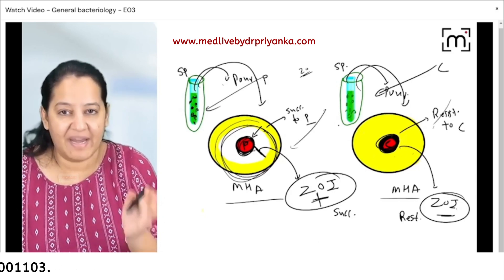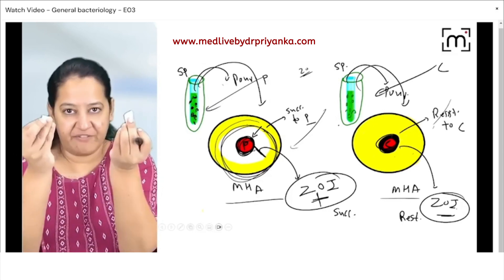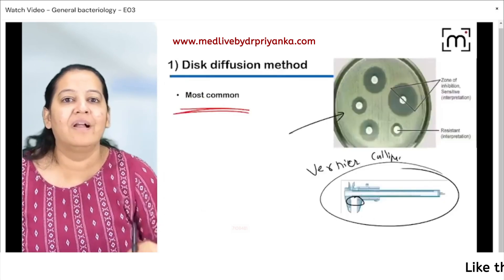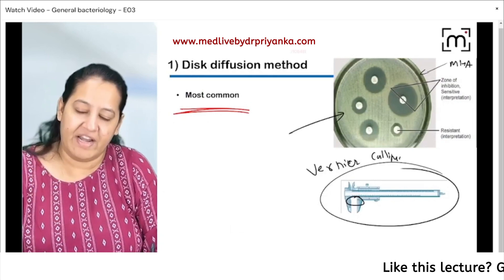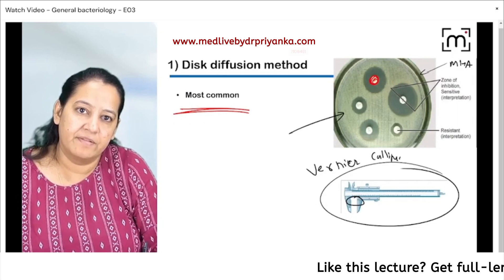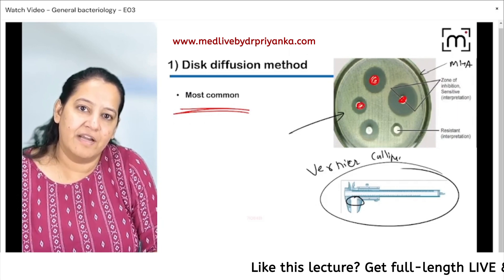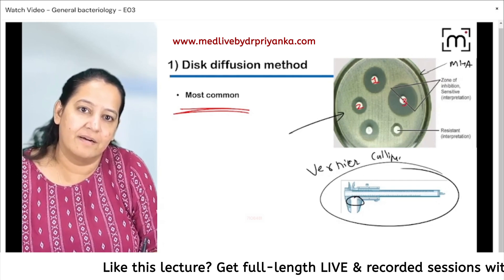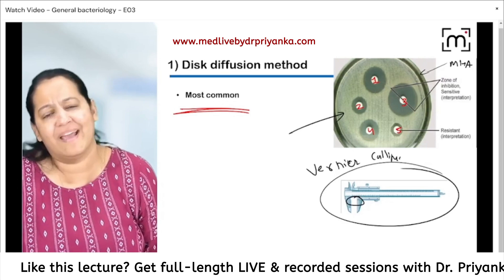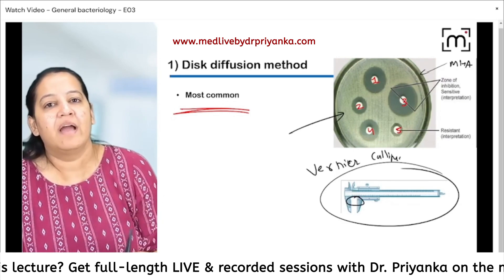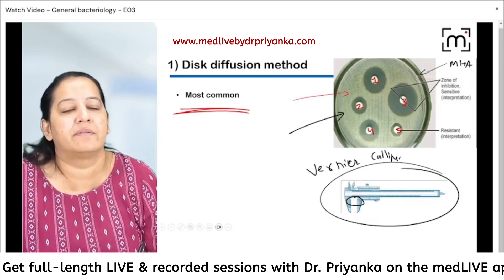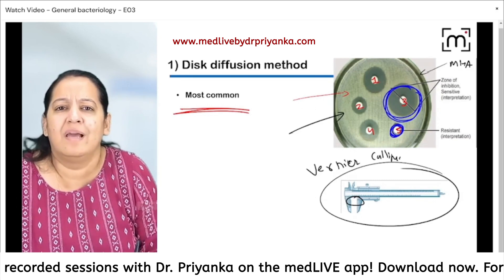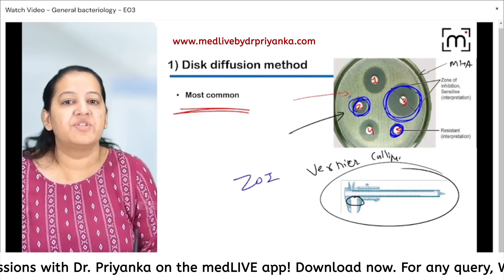Now you may ask: if I want to test 20 antibiotics, do I take 20 different plates? No — you can take 20 different circular filter paper discs and arrange all of them on one single Mueller-Hinton agar plate. I take different antibiotic filter paper discs — first antibiotic, second antibiotic, third, fourth, fifth — one may be penicillin, one is cephalosporin, one is aminoglycoside, and so on. You can see the whitish-yellow color colonies in the background. Here I get a big zone of inhibition, here nearly no zone, and here a little bit intermediate between the two.